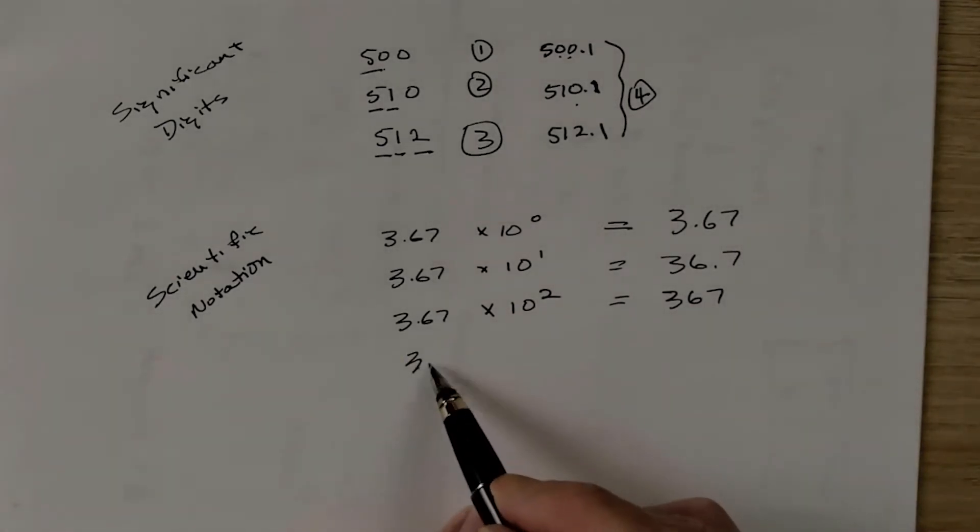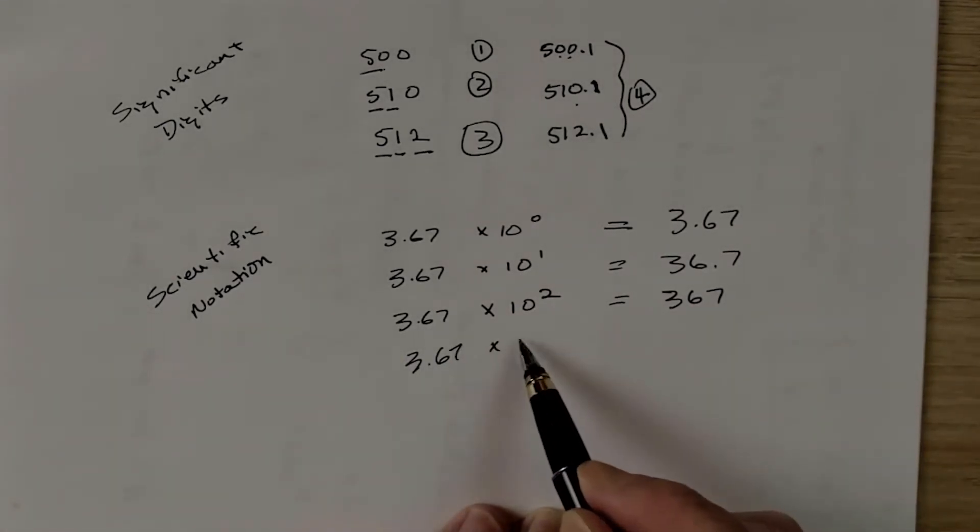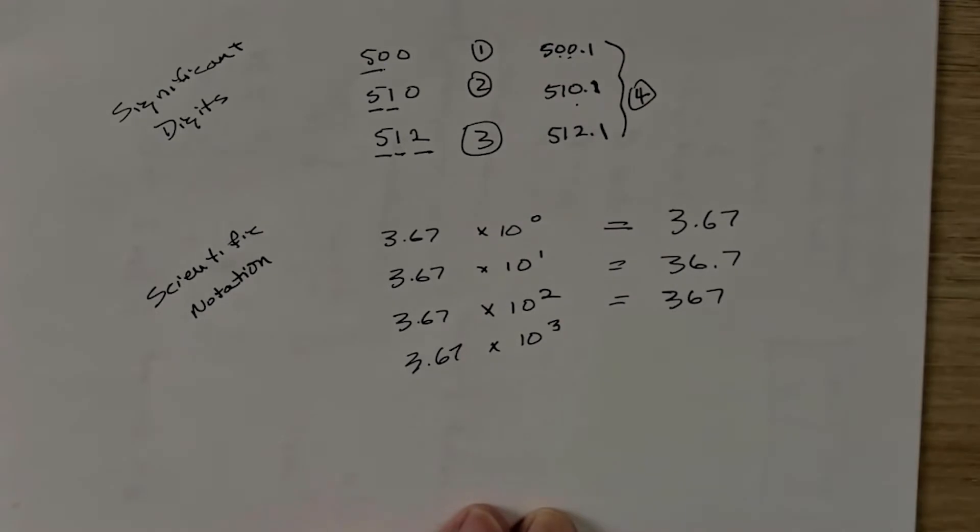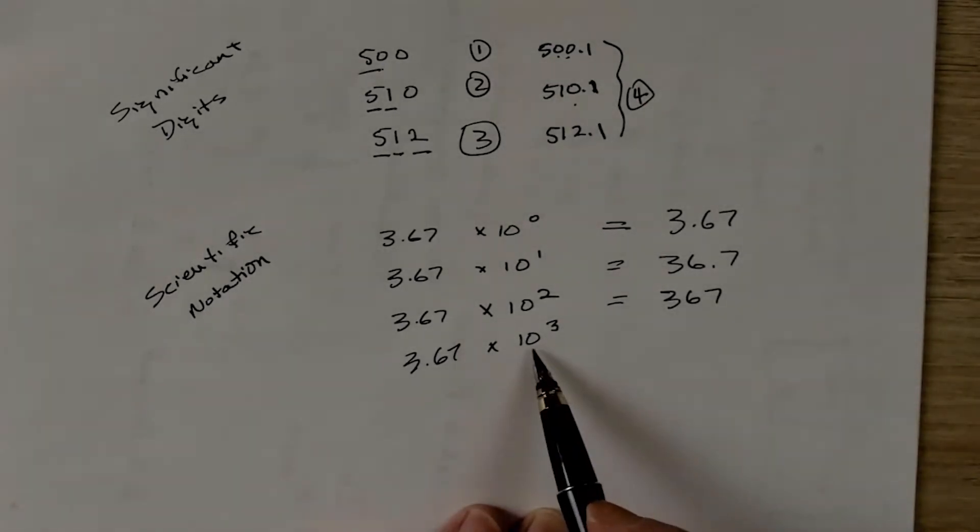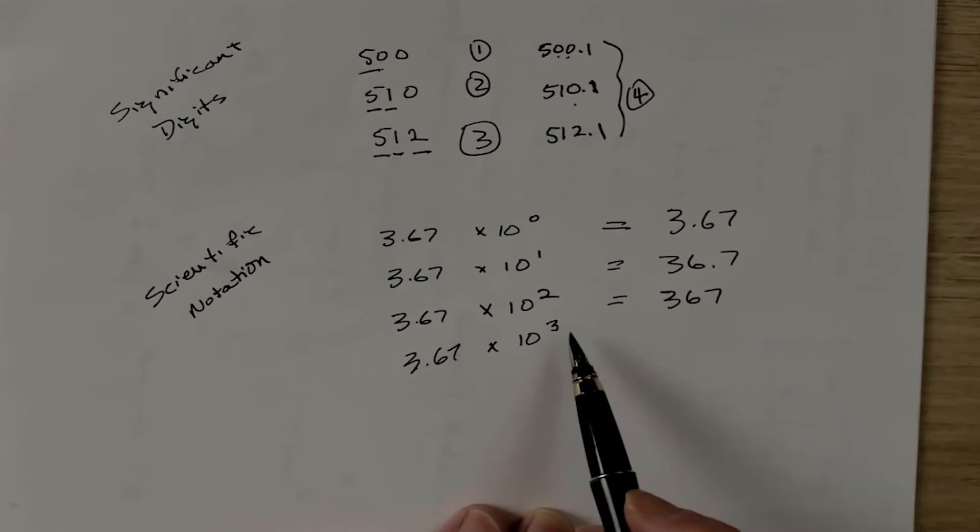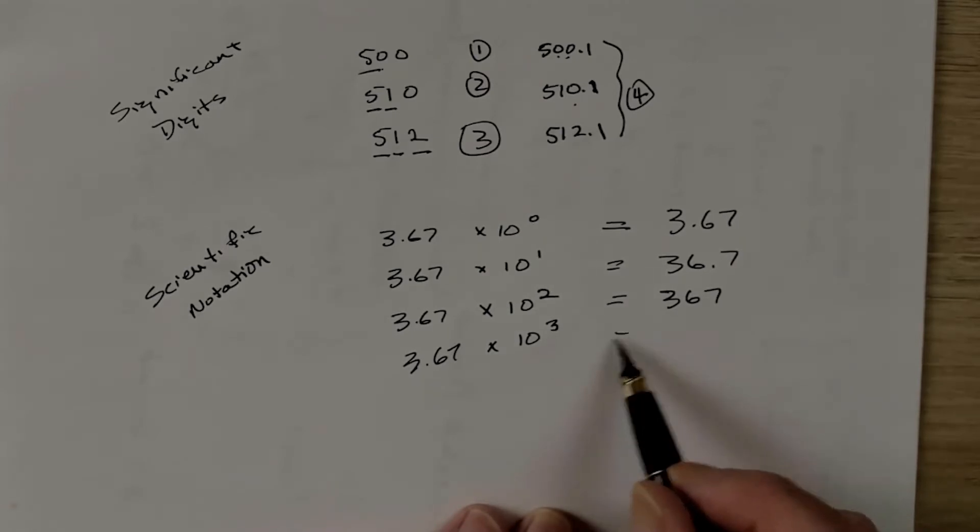So let's look at this one right here. What would we have with this? What is 10 times 10 times 10, or 10 to the power of 3? That's 1,000. So that would equal 3,670.